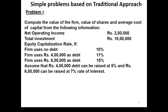Let us discuss the first problem based on the traditional approach. The problem asks us to compute the value of the firm, value of shares, and average cost of capital from the following information: net operating income is 2 lakh rupees, total investment is 10 lakh rupees. The equity capitalization rate is: 10% if the firm uses no debt, 11% if the firm uses 4 lakh rupees as debt, and 15% if the firm uses 6 lakh rupees as debt. 4 lakh rupees of debt can be raised at 5% and 6 lakh rupees at 7% rate of interest. Three cases are given: firm uses no debt, firm uses 4 lakh rupees as debt, and firm uses 6 lakh rupees as debt.